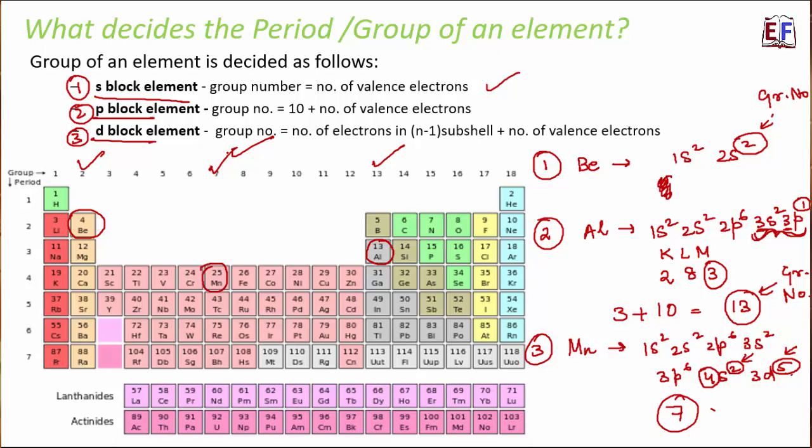This level of detail about sub-shell electronic configuration will be covered in 11th and 12th standard, but understanding how to determine the period and group of an element is important. For now, the key takeaway is the method we use to find which period and which group an element belongs to.